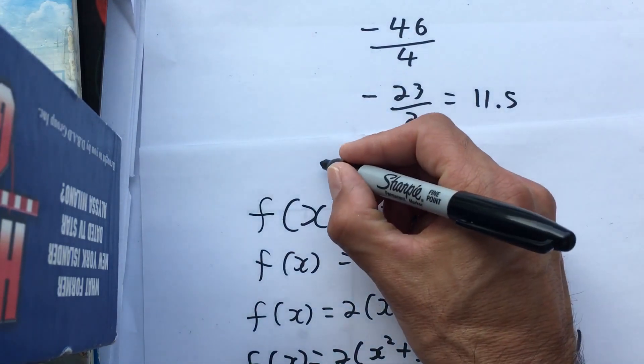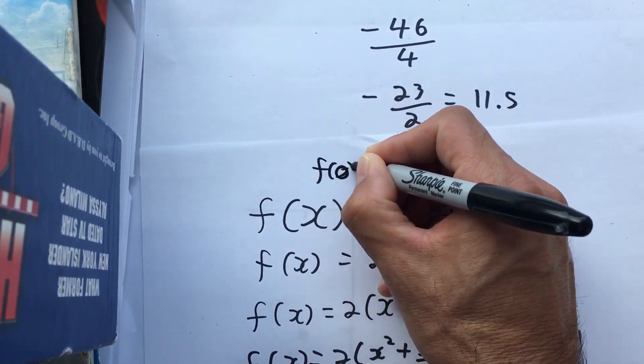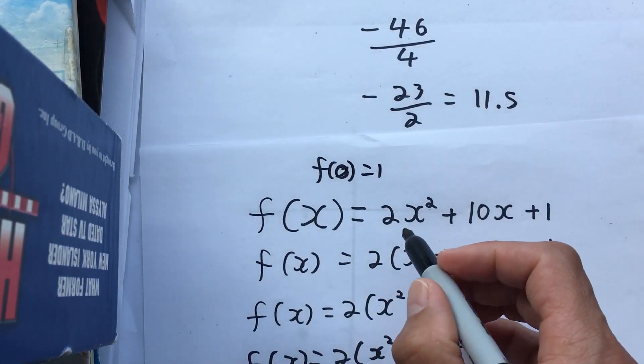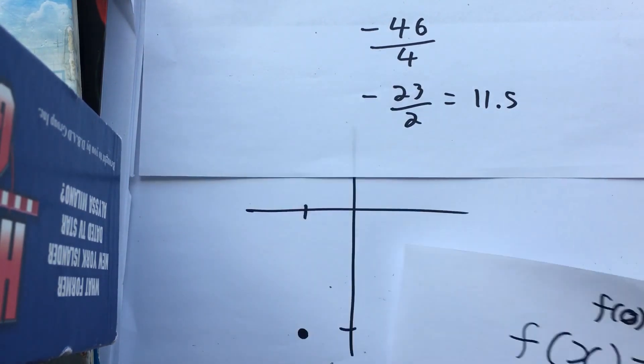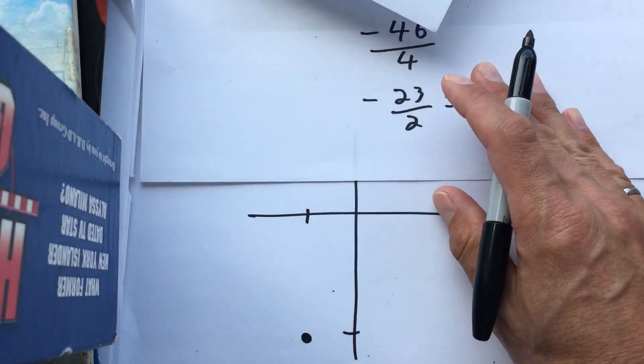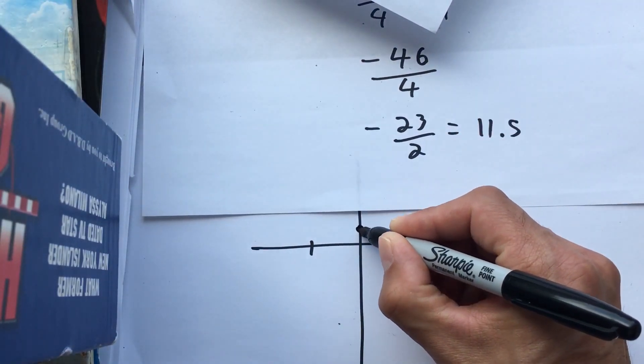So in Lagrange notation, that is f(0) = 1, and what I did there, I just made x = 0 in both of these terms. It gave us a 1, which gives us this point here.